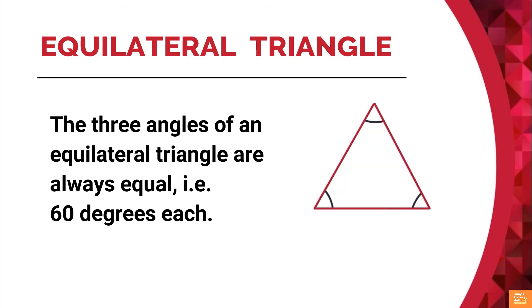In the earlier part, we have seen that three angles of an equilateral triangle are always equal in measure, that is 60 degrees each. So, equilateral triangles can be termed as equiangular triangle also.